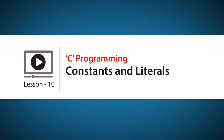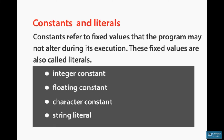What is a constant? What is the definition? A constant is a fixed value. If we assign a variable, we can change the value at execution time. We will assign the constant as fixed values. There are four types: integer constant, floating constant, character constant, and string constant. If we assign a constant value, we cannot change the value at execution time.